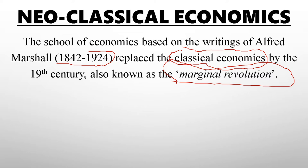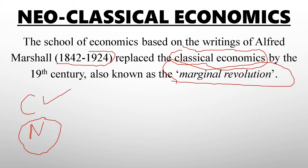Classical economics was replaced in the 19th century and we call the new school neoclassical. So the classical economists came first, and then the neoclassical ones followed. We call this movement neoclassical economics.